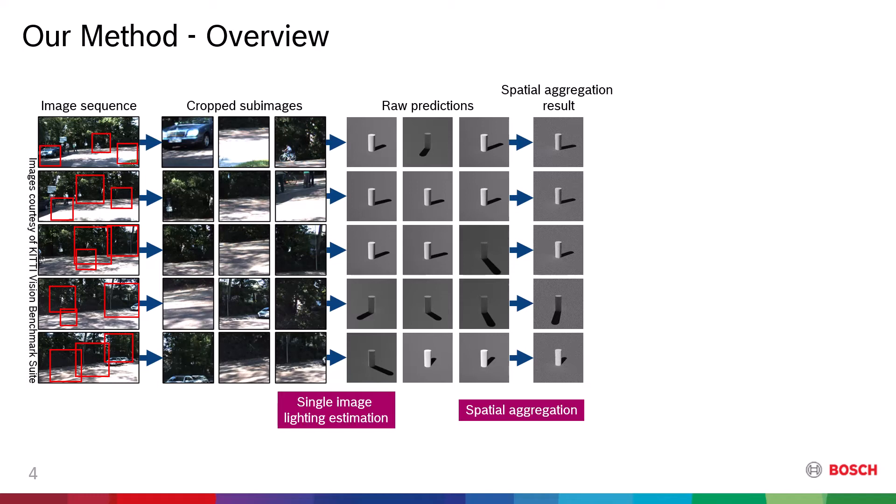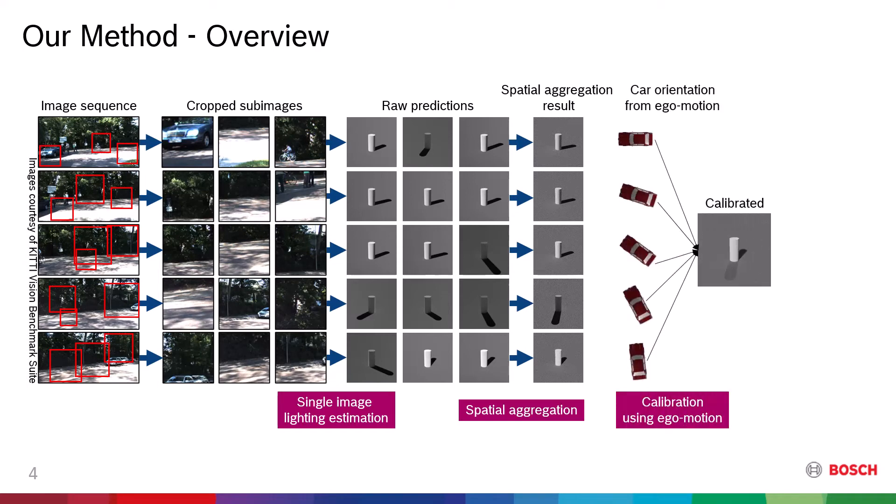After that, those estimates are calibrated using the estimated camera ego motion. In this way, all the estimates from individual camera coordinate systems are unified in the global coordinate system.